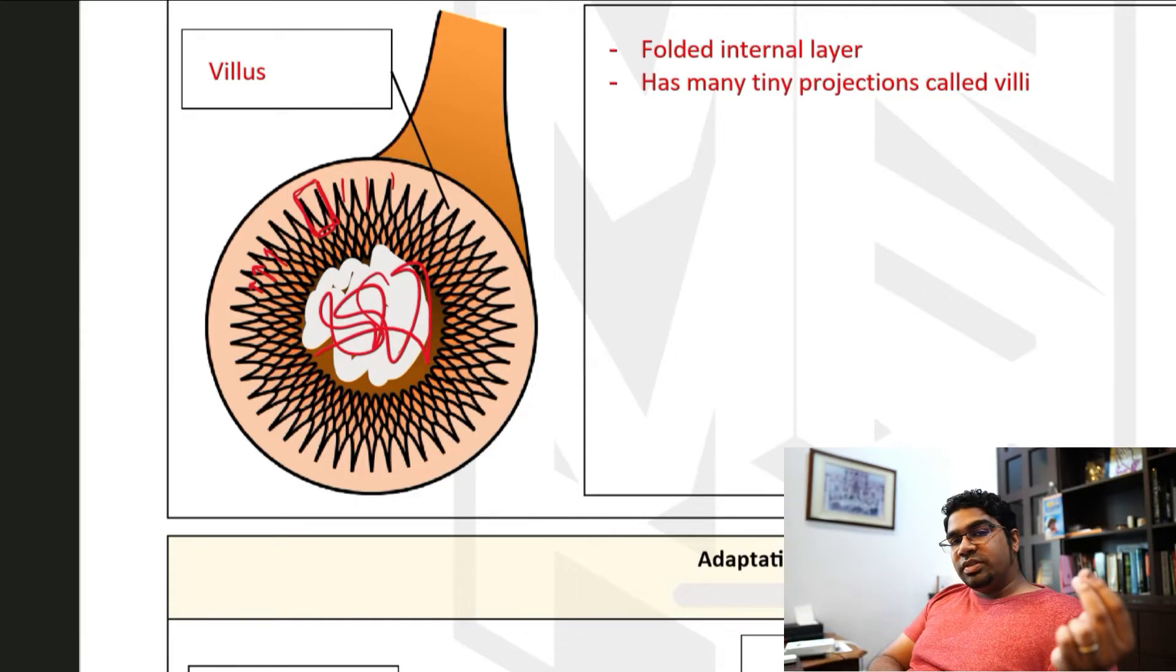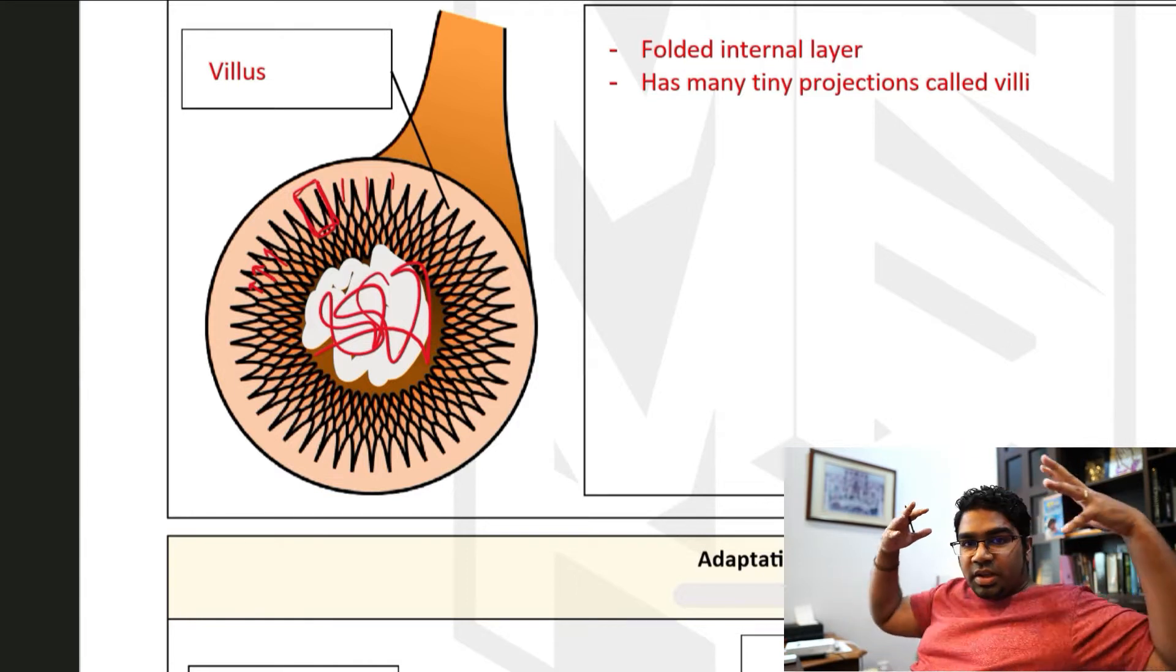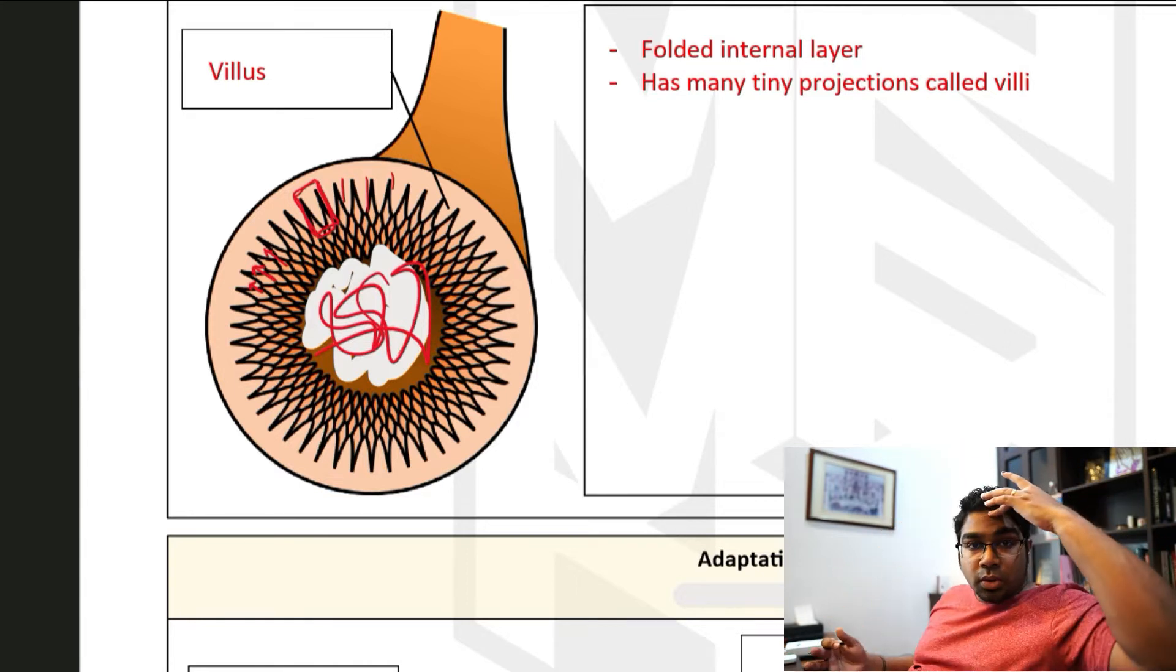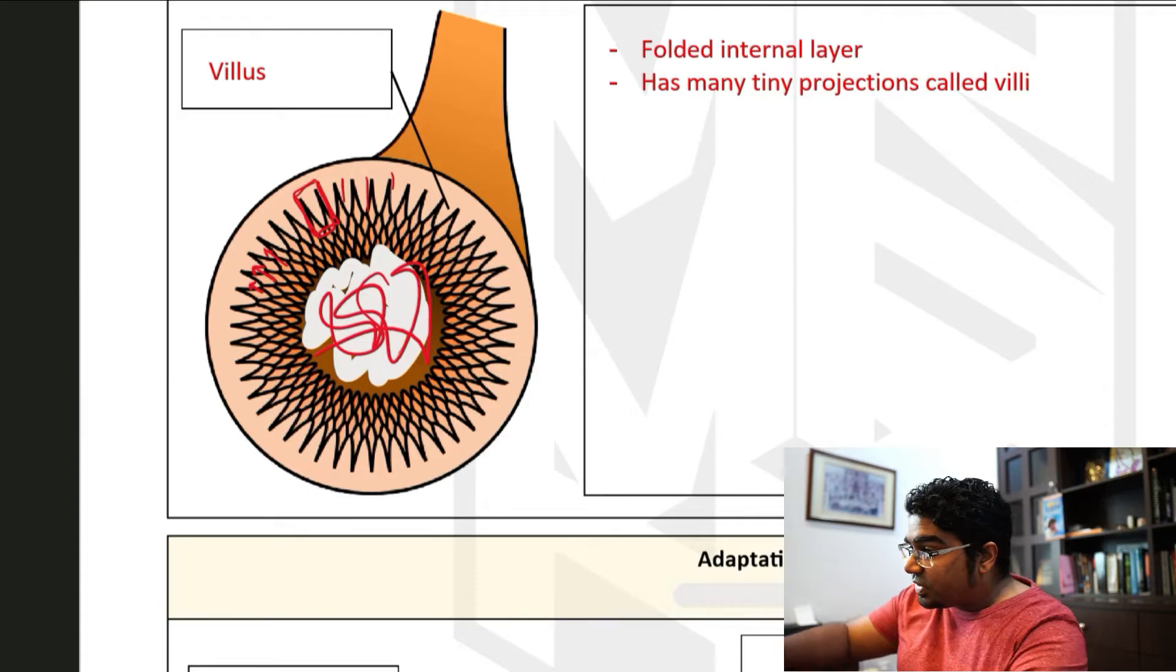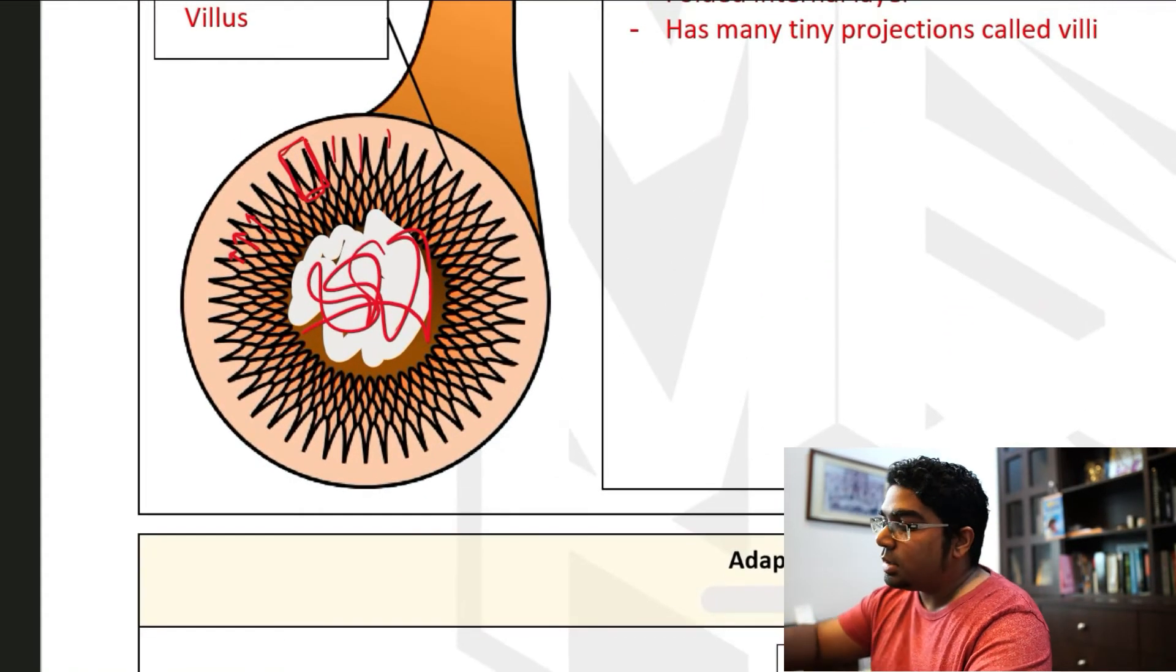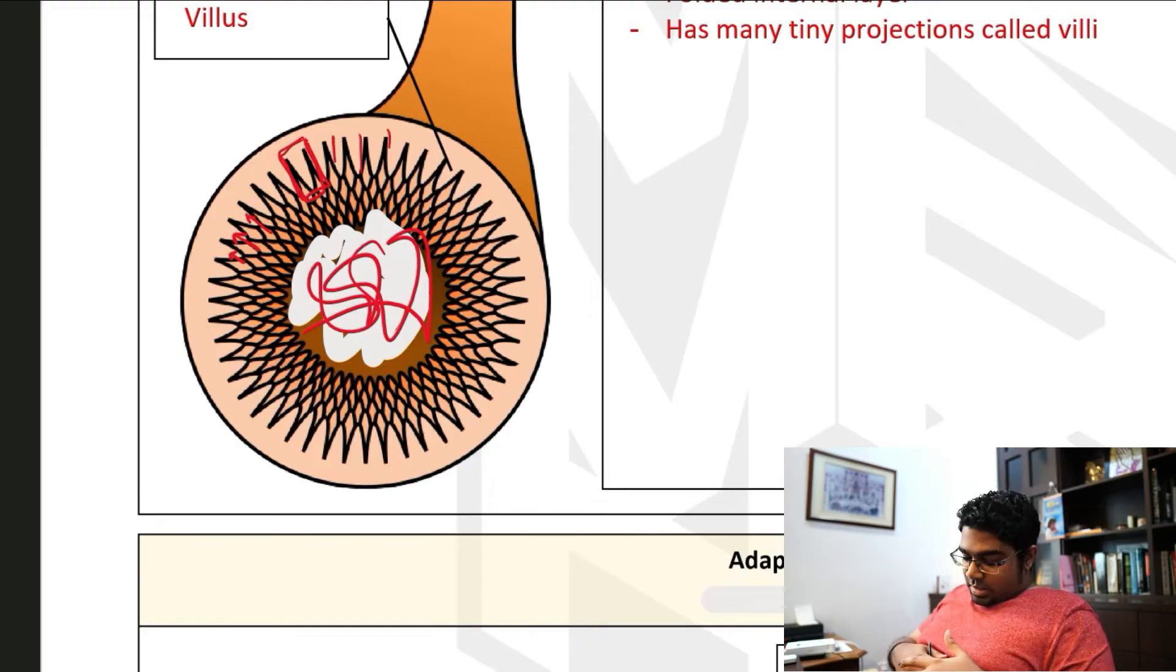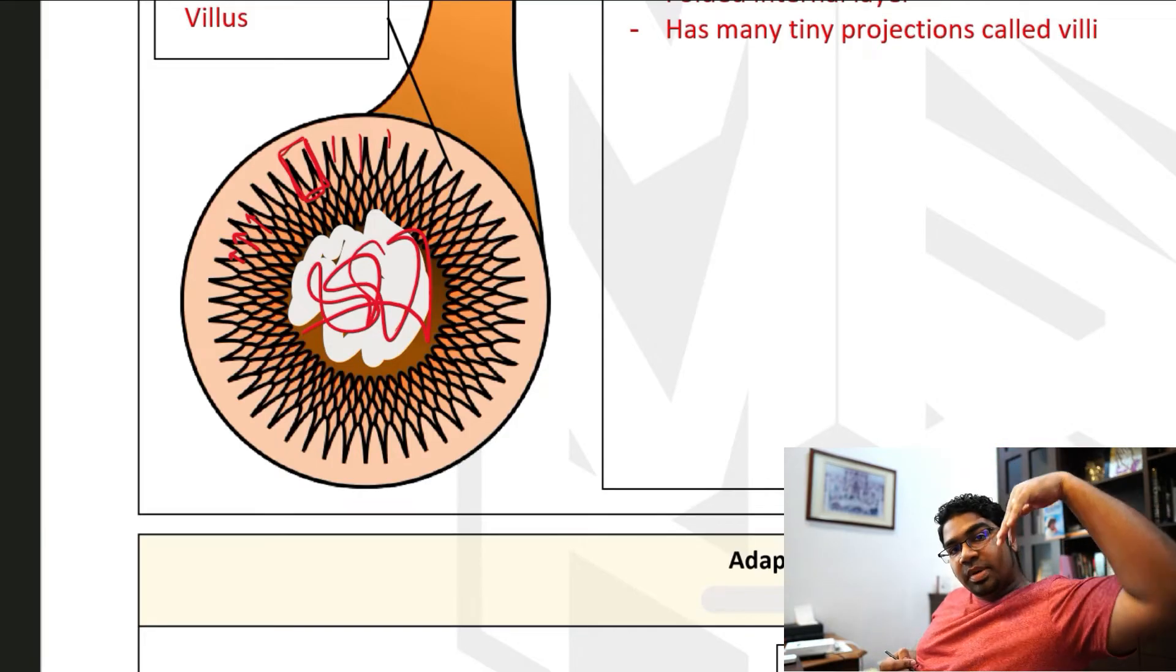So when we say absorb into our body, absorb into where? The final place the nutrient needs to reach is every single cell in our body. Every single cell in our body, from our head to our toe, requires these nutrients to function normally. But now, you must remember the position that we are in. This ileum is in the area of the abdomen. So how is the nutrient from the abdomen going to go to the cells on the top of my head and the cells at the bottom of my feet?